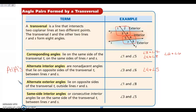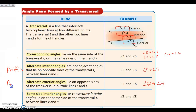Alternate exterior angles are similar to interior angles, except now the two angles are on the outside of the two lines — on alternating sides of the transversal. Angles 1 and 8 are on the outside of the two lines but on alternating sides of the transversal. Angles 2 and 7 are the other pair. We call these AEAs.